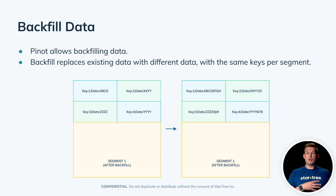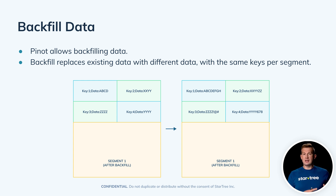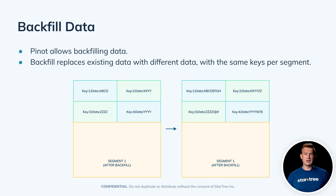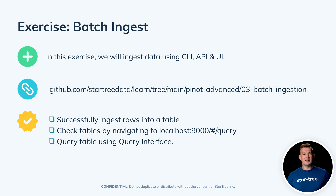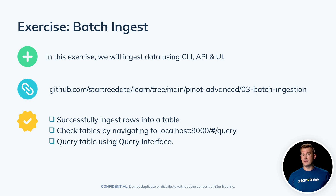There are use cases where you need to reload or backfill data, and Pinot supports that. When configuring a backfill, you will be replacing the values for a particular key with values from a new key. This is a powerful feature for whenever you feel the data is incorrect and you need to re-upload new data — backfill is here to help. When you're ready to get your hands dirty, go to the batch ingestion folder in the Pinot advanced repository, where you can find the Docker Compose file, the README, all configuration files including the job spec configuration, to create batch ingestion into a Pinot cluster.